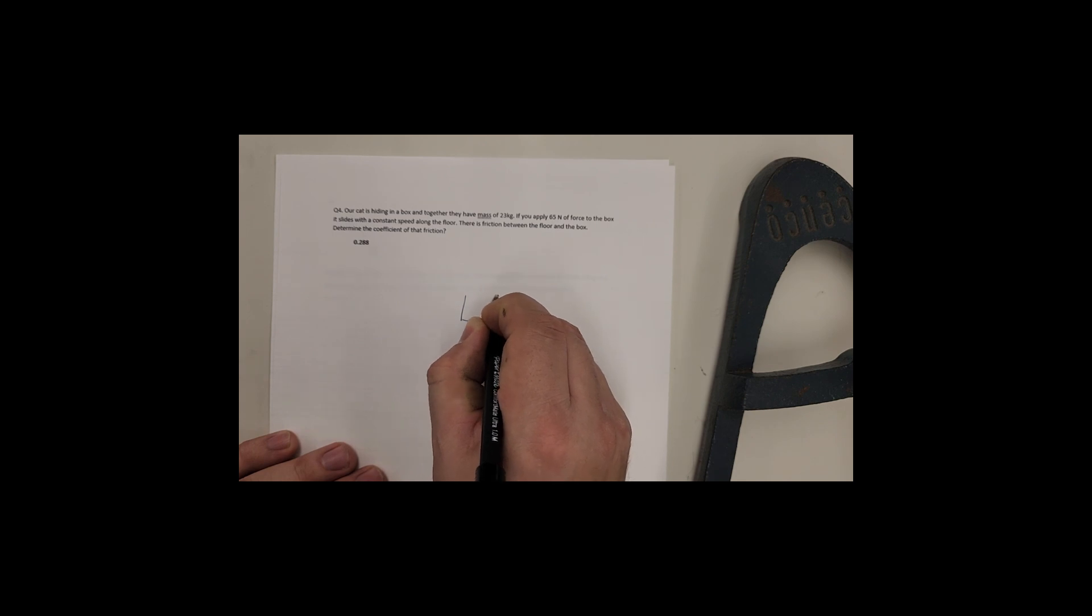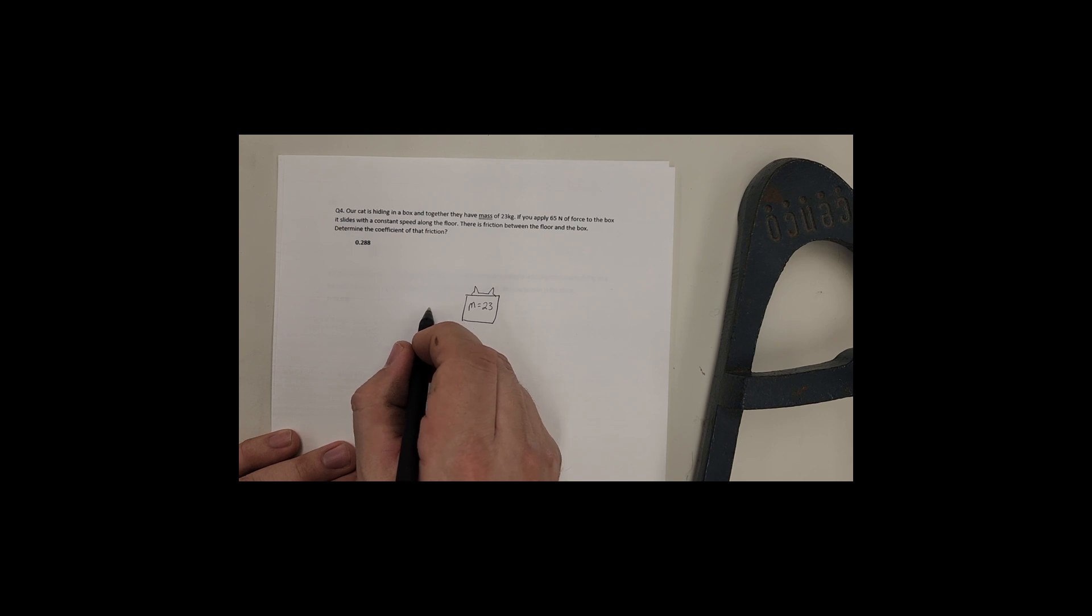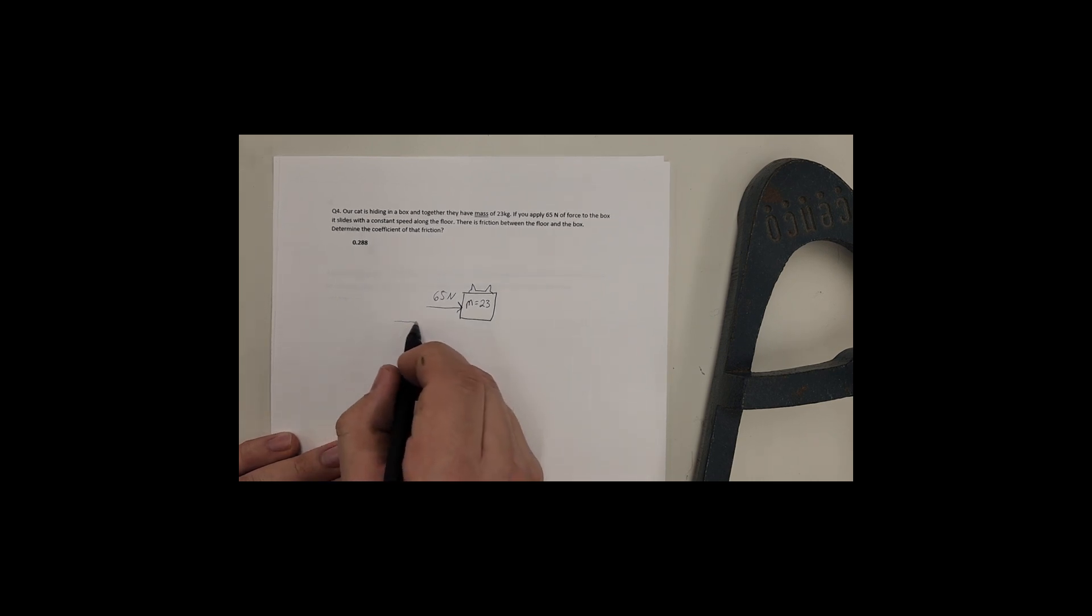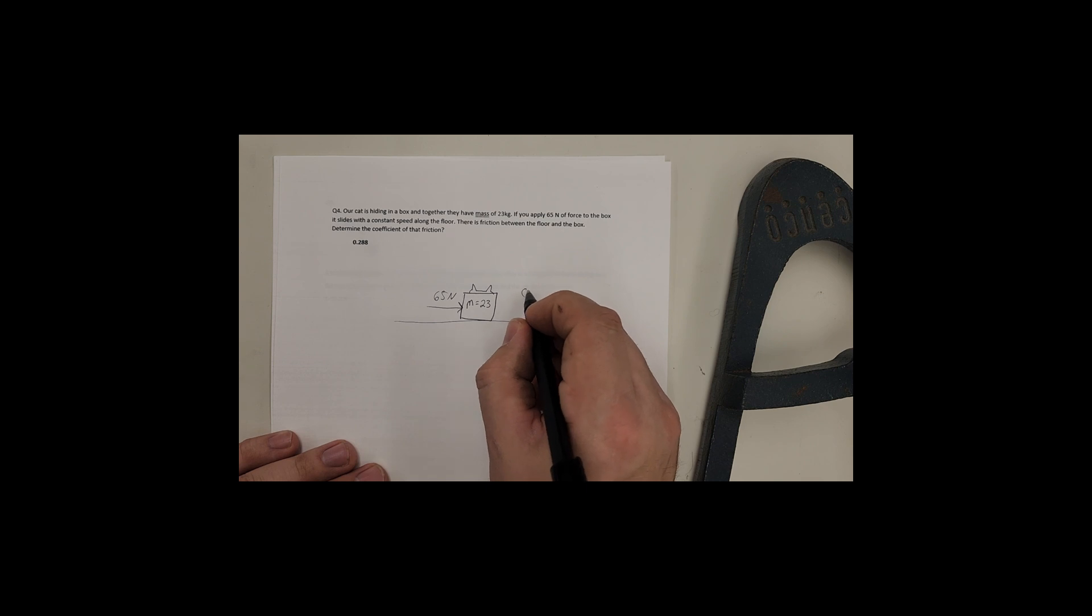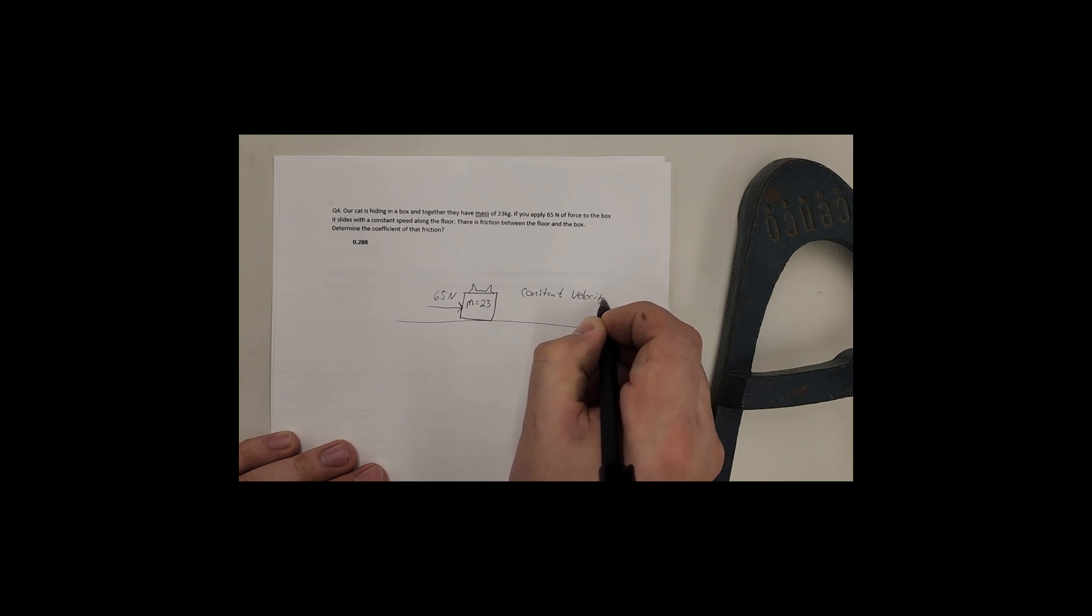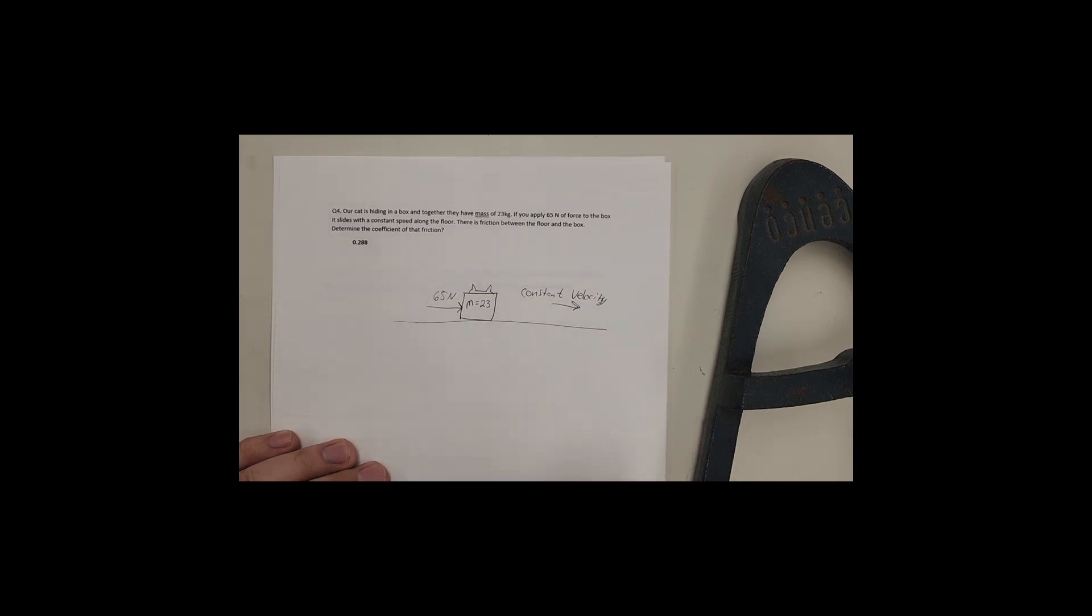So we've got a box, and we've got our furry friend hiding in the box. The total mass of the box is 23. We have to push it with 65 newtons of force in order to get this box to slide with some constant velocity. So that is a key word in here, that it is a constant velocity.